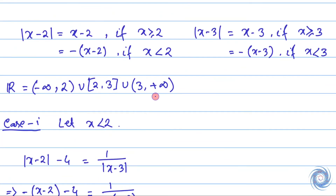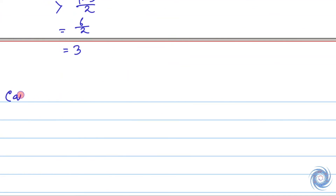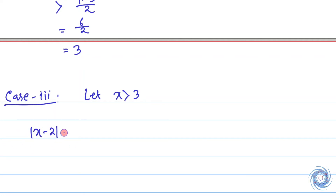Now let us assume that x lies in the interval [3, ∞). Let us write down the given equation. Since x > 3, therefore x - 2 is positive and also x - 3 is positive. So from here we have...